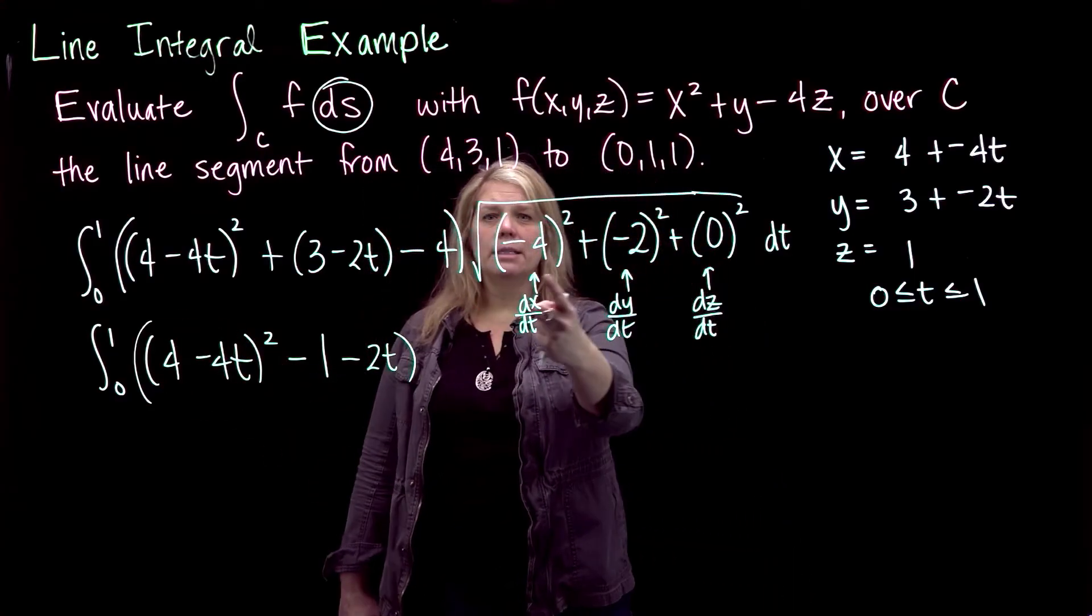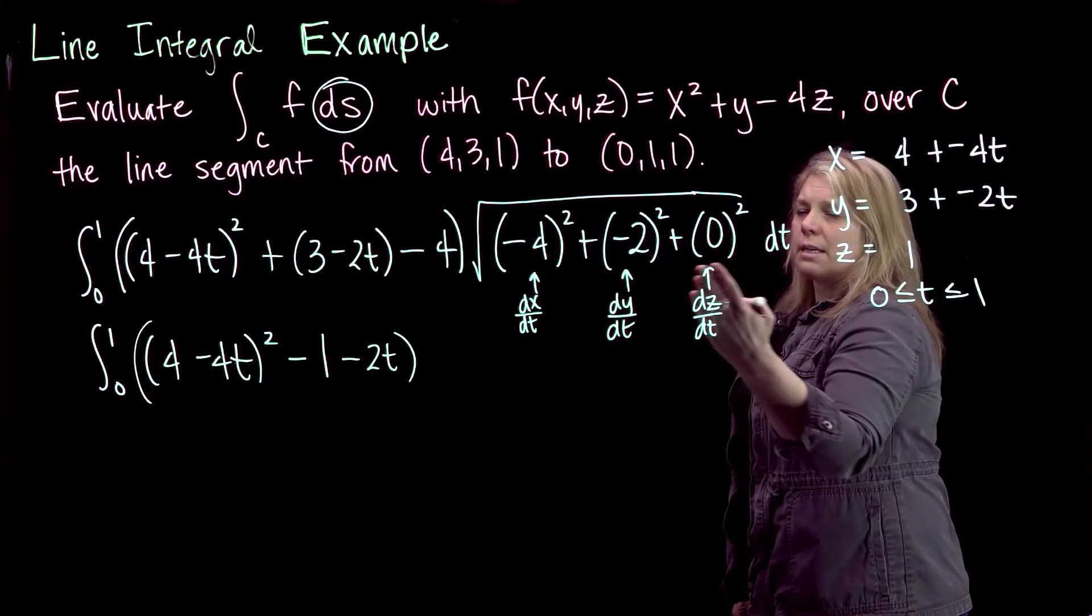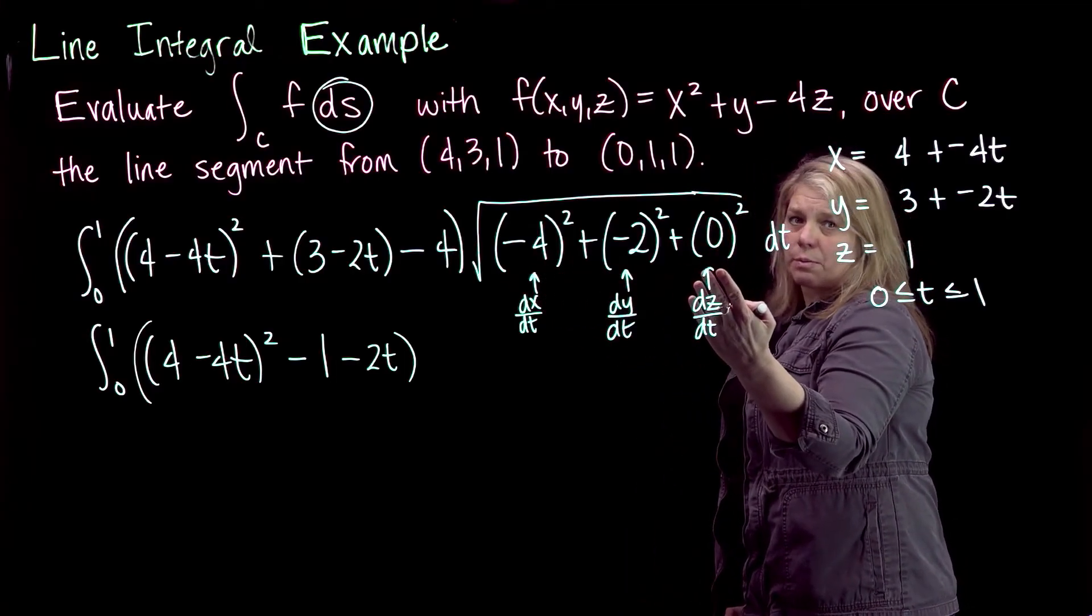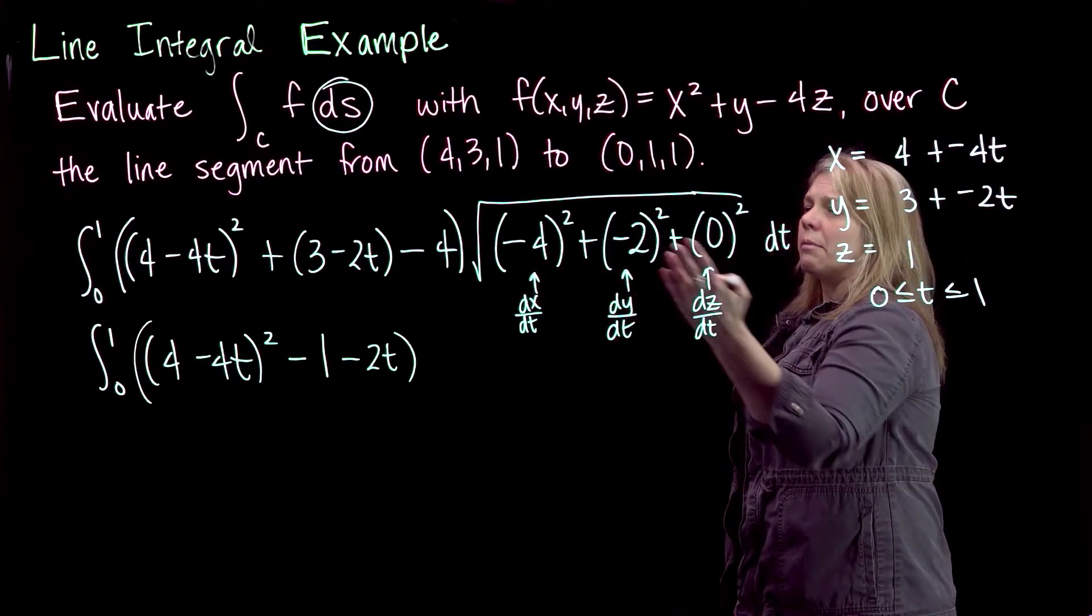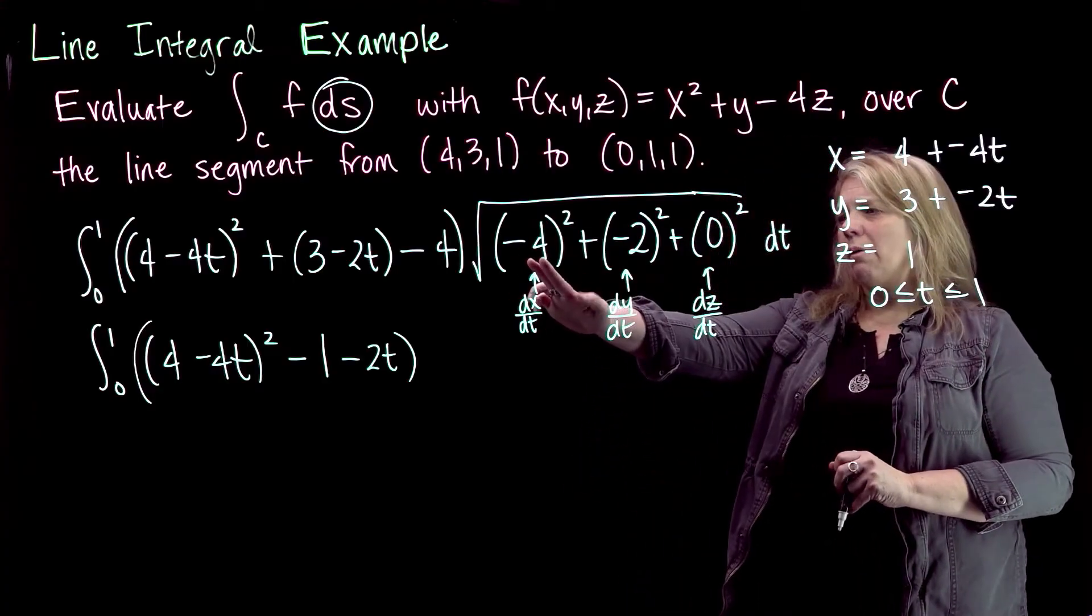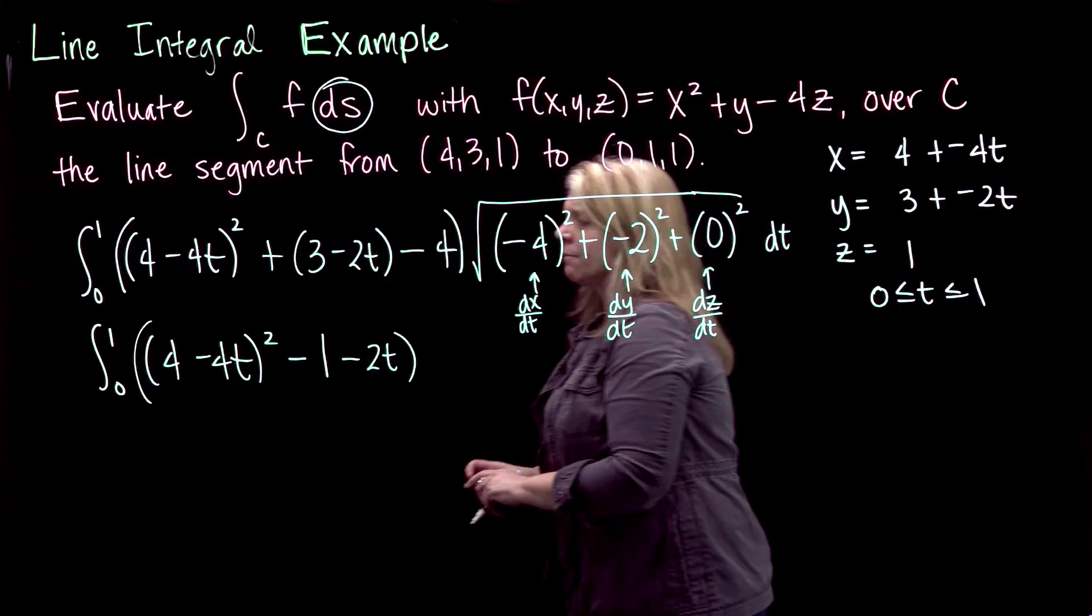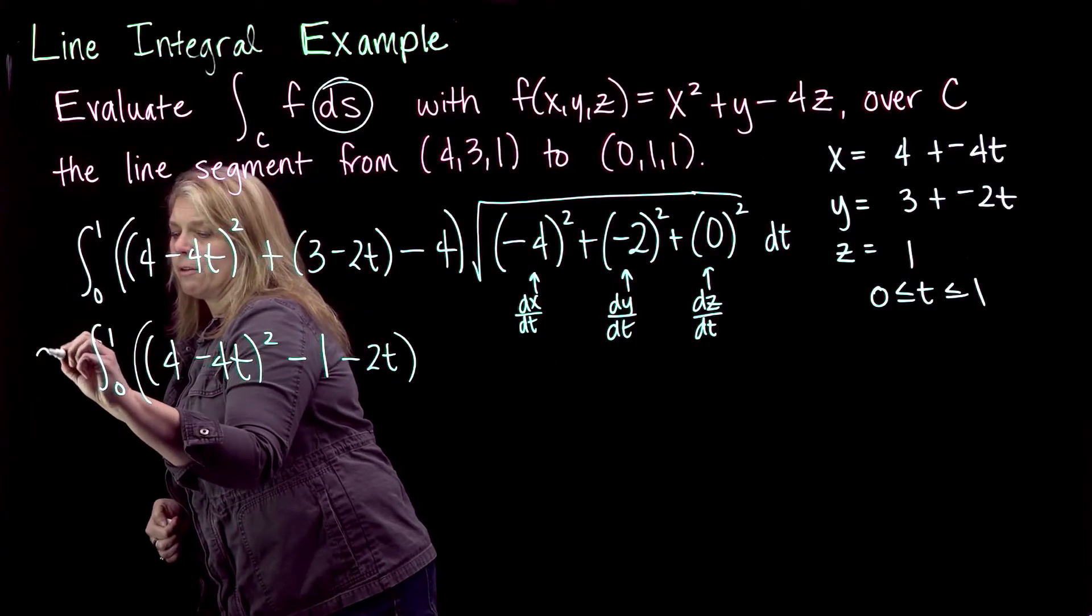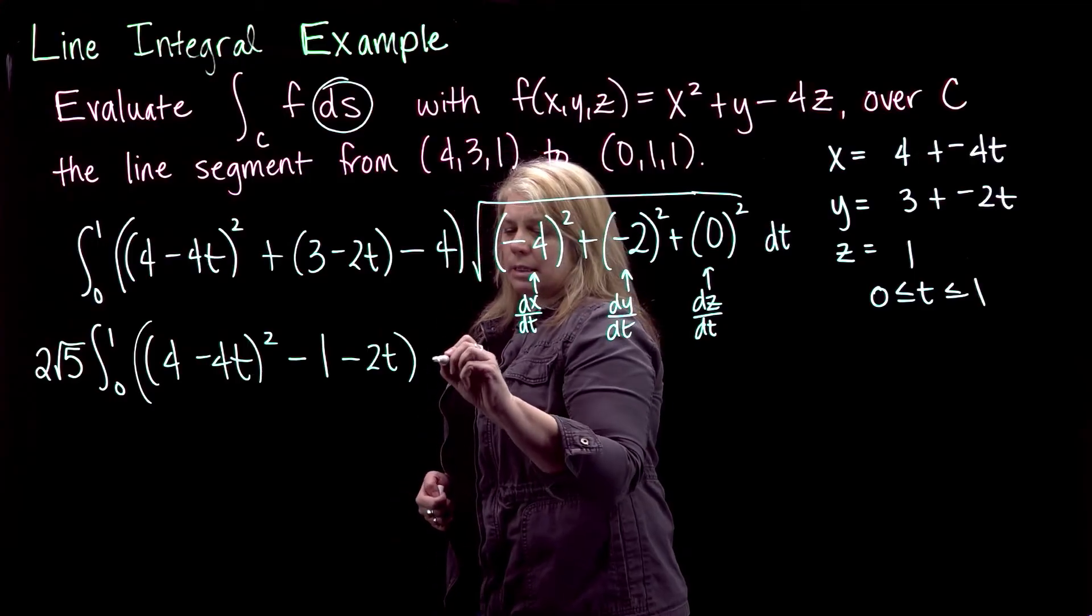In this case, my ds differential ends up all being a constant. All of this ends up simplifying to a constant on this problem, that won't always happen. But since this is all a constant, I'm going to just simplify that and pull that out front of my integral. So I will have 16 plus 4, so 20, square root of 20, or 2√5 if you would like to simplify that, and then my dt here at the end.